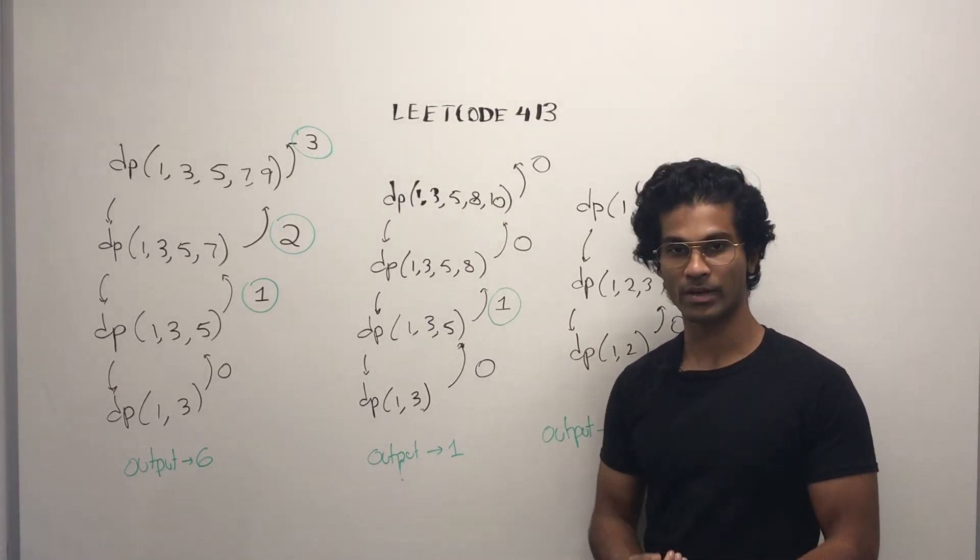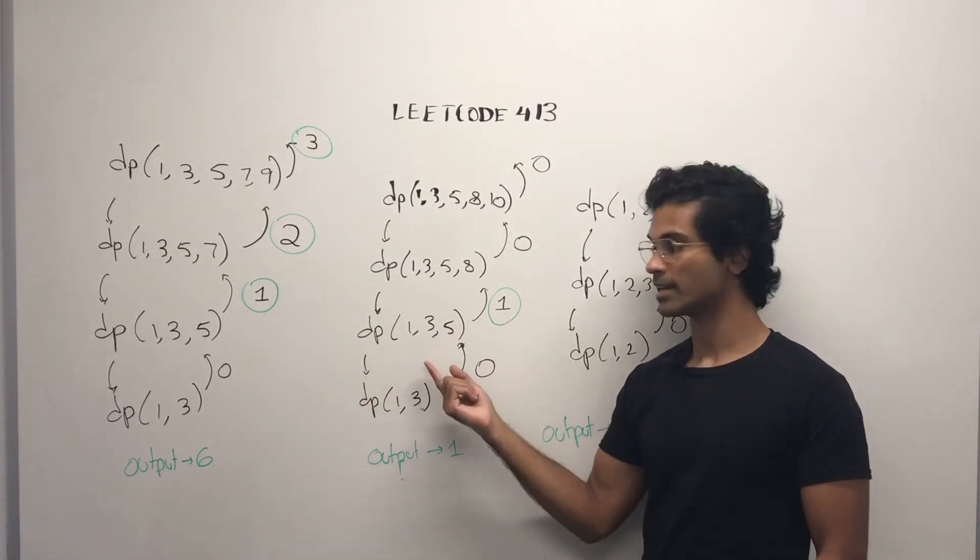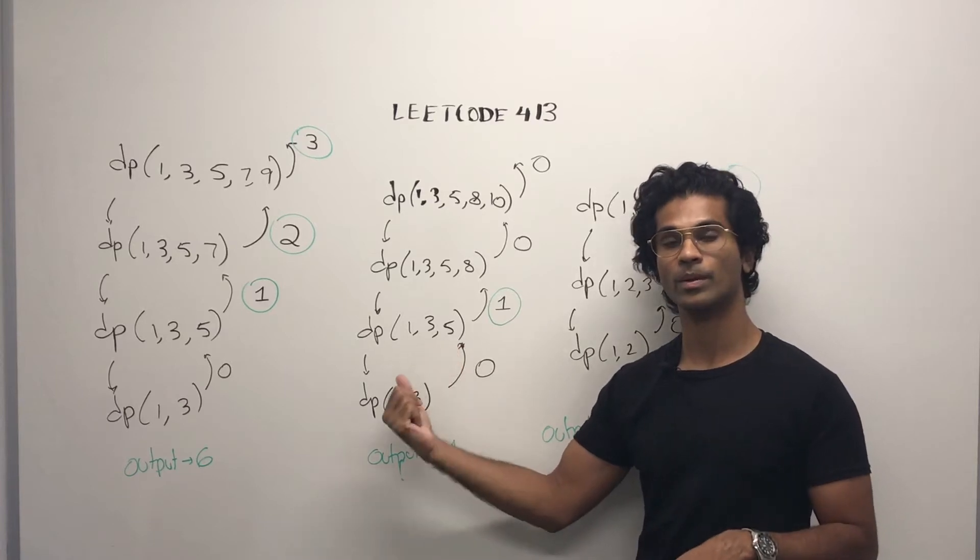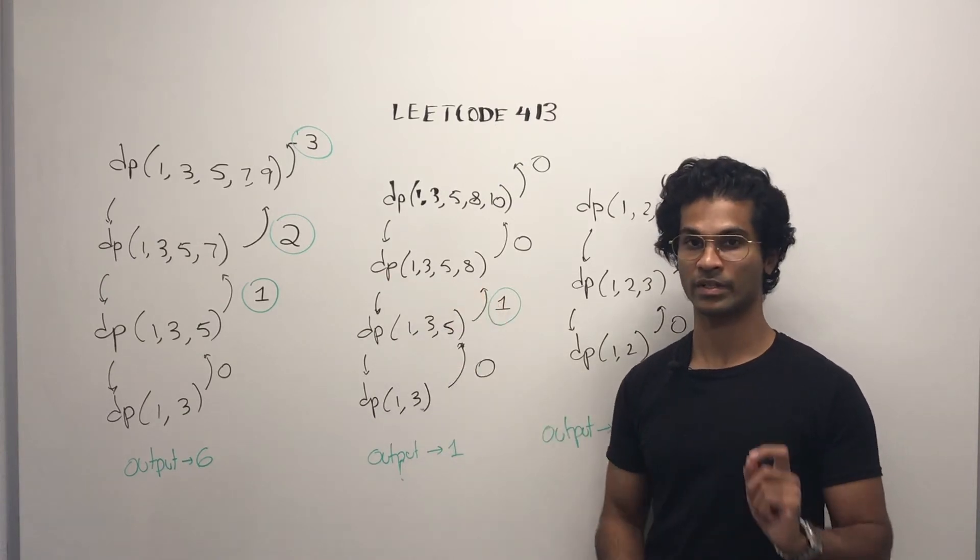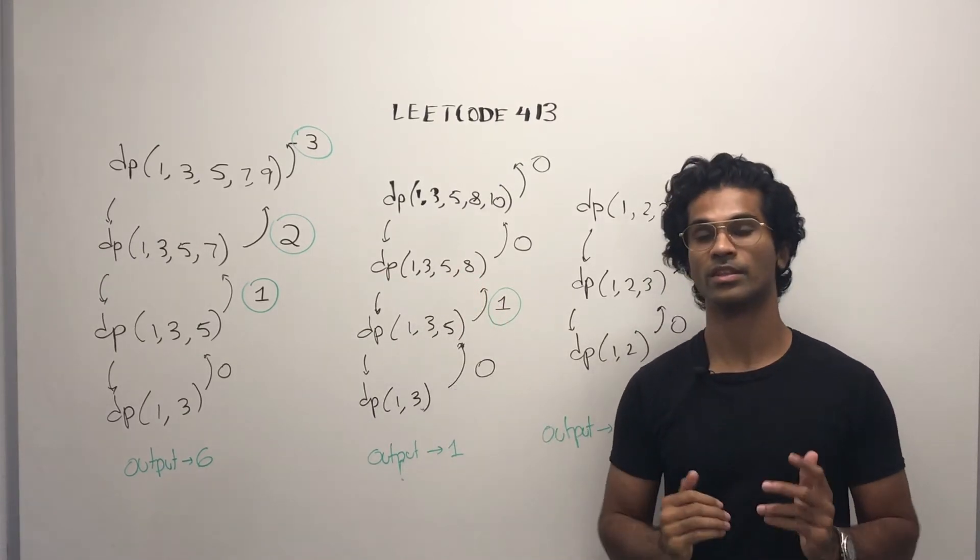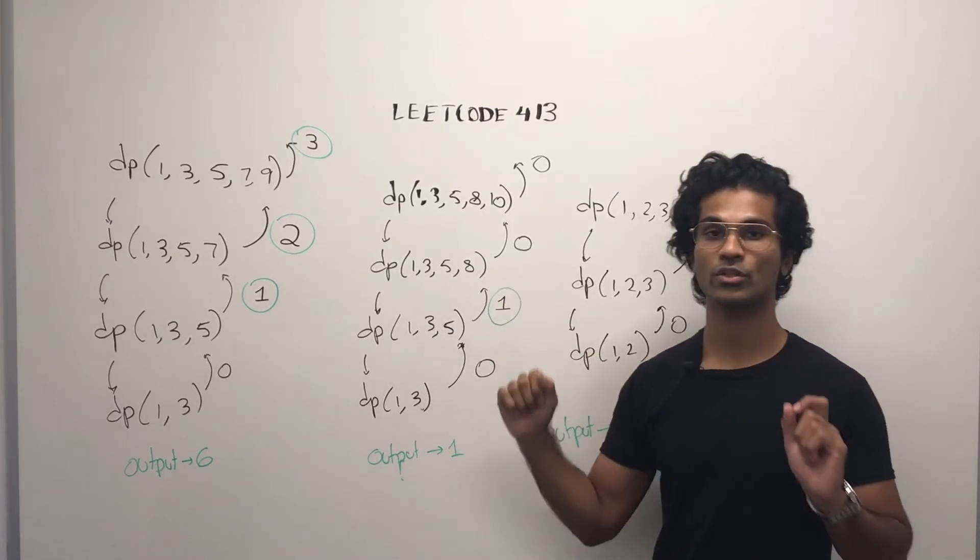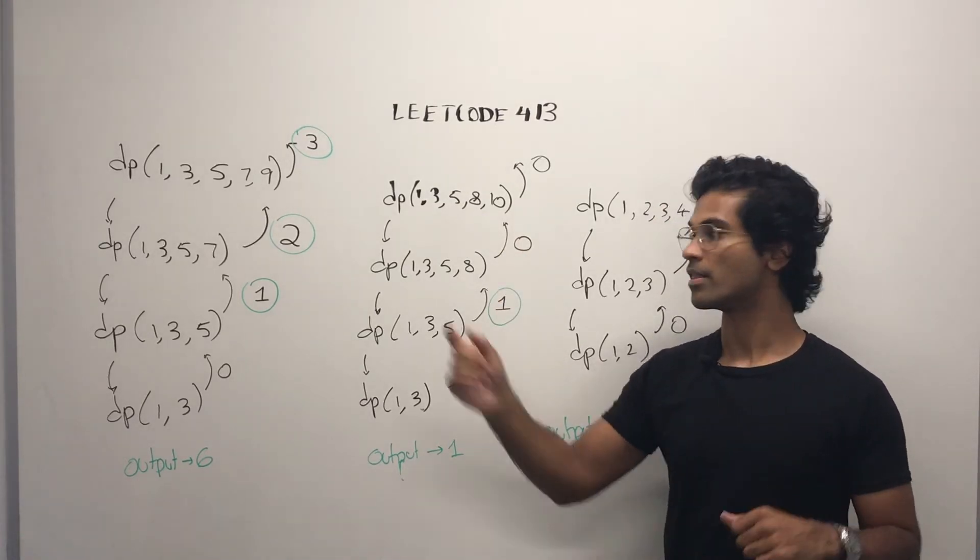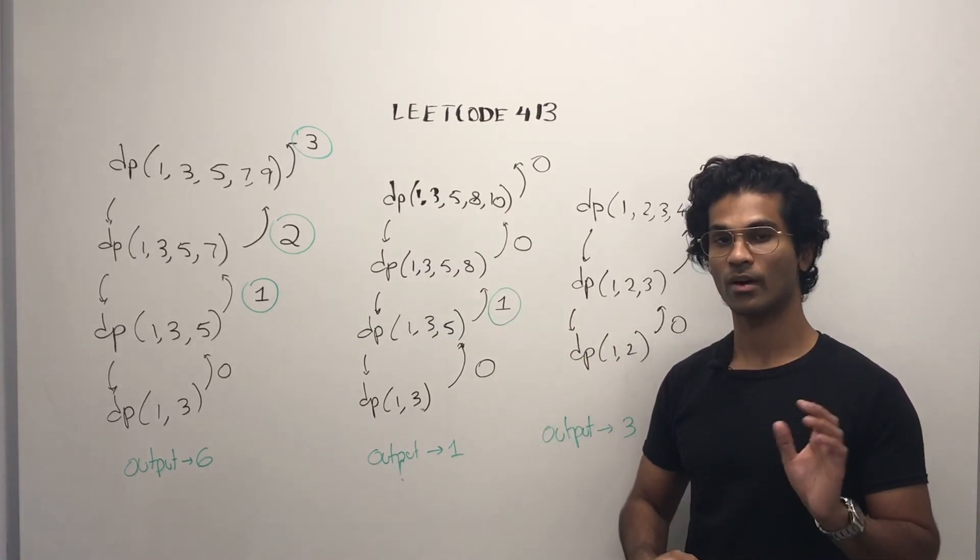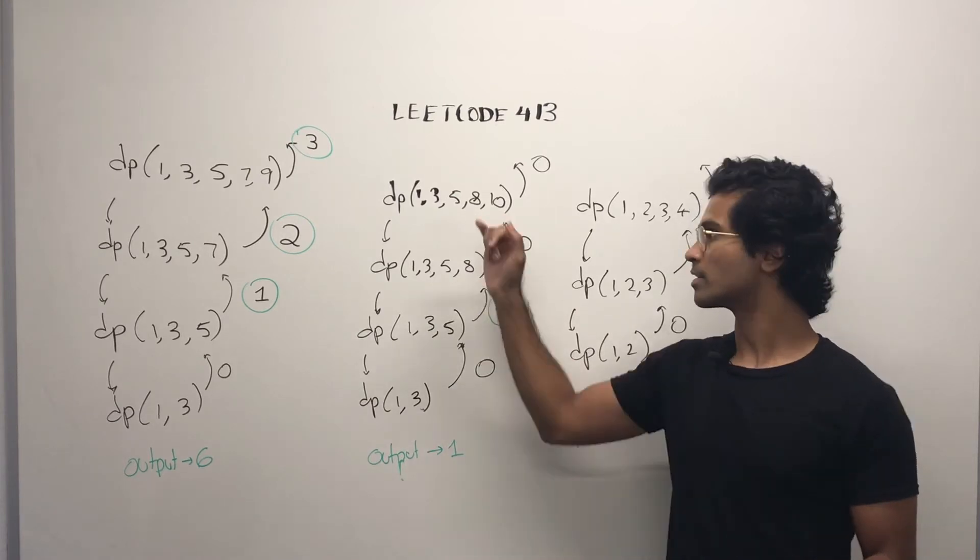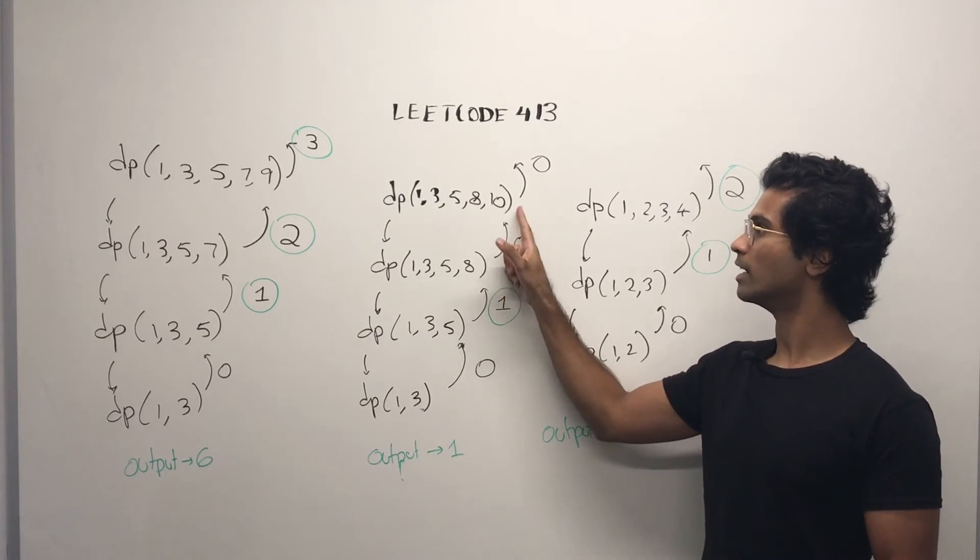We ask the array, and the array is going to ask its child. 1, 3, 5, 8 goes here. Then the base case says 0. This stack is going to see is 5 minus 3, the same as 3 minus 1. It is, so it's going to add 1 and return that. Now, this stack is going to see is 8 minus 5, the same as 5 minus 3. It's not. So it's going to ignore what was there, and it's just going to simply return 0. Then this one is going to do 1, 3, 5, 8, 10. And it's going to see, okay, is 10 minus 8 the same as 8 minus 5? It's not. So it's going to ignore whatever was passed up. It's going to return 0.